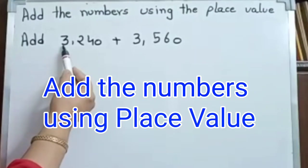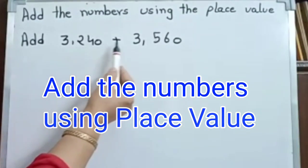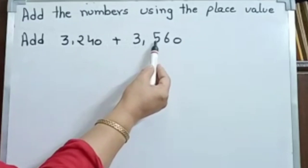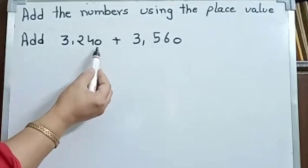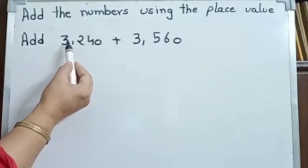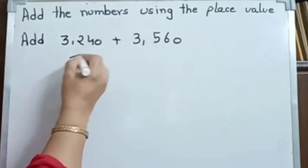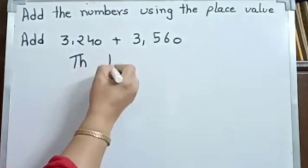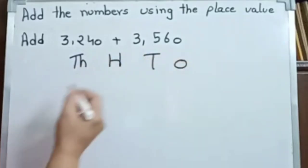Here we have 3,240 plus 3,560. We set up the place value columns: ones, tens, hundreds, thousands.